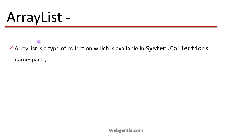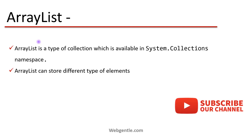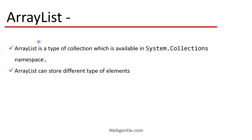ArrayList is a type of collection available in the System.Collections namespace. If you have to use ArrayList, you have to include the System.Collections namespace in your file. ArrayList can store different types of elements. In previous parts we learned about Array, where all elements were of the same type. But here in ArrayList, we can store different types of elements.